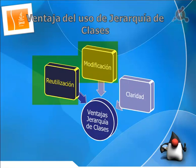No hay necesidad de tener que andar cambiando o compilando nada por debajo; reciben la nueva información a través de la herencia. Esto también hace que el código sea mucho más claro. Centralizándolo mediante la jerarquía siempre podemos acceder rápidamente a una clase donde se definan características de determinado tipo.